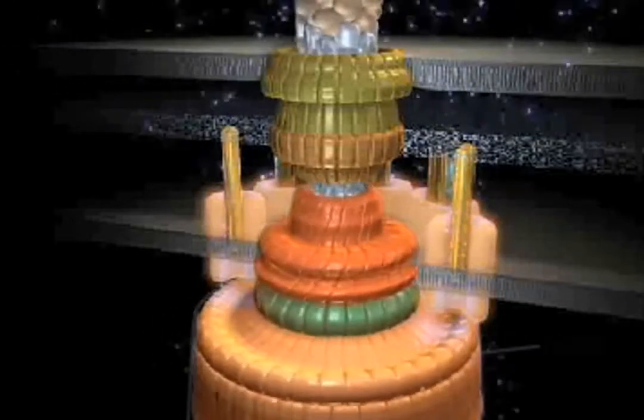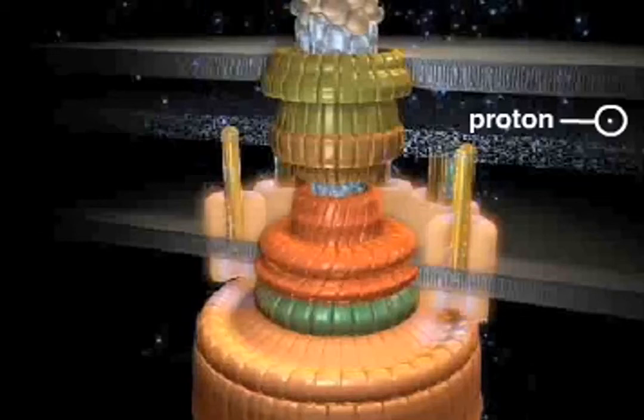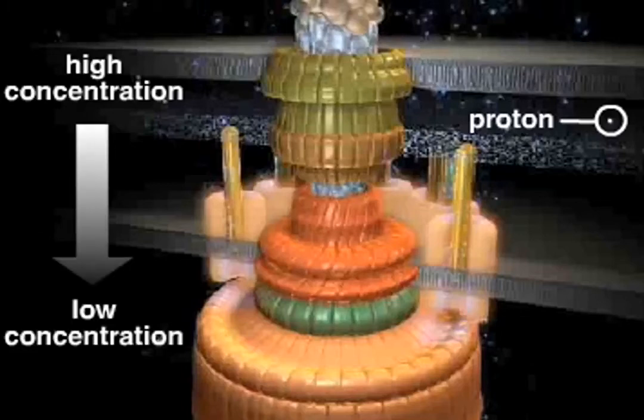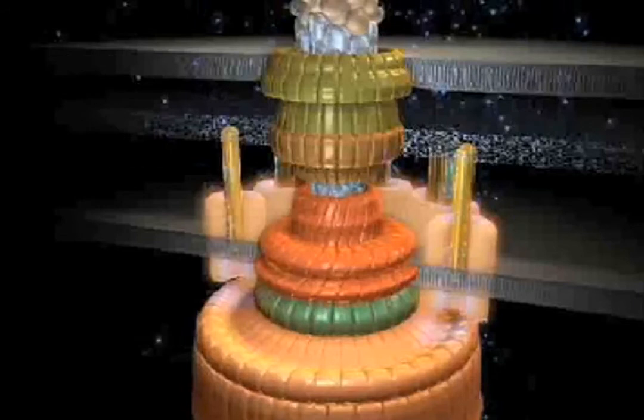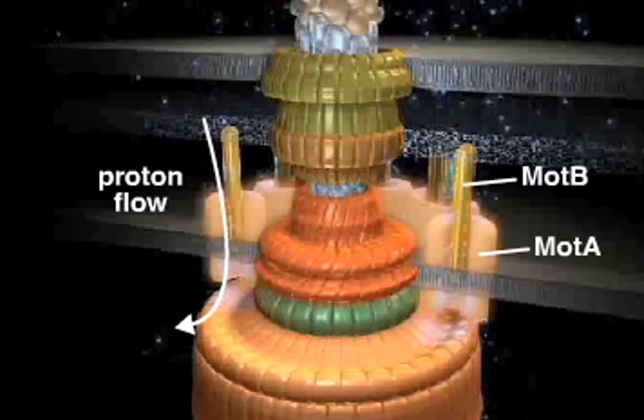The motor derives its power from a proton gradient across the membrane. In this example, a high concentration of protons exists outside and a low concentration exists inside the cell. The protons flow through the interface between two types of proteins, called MotA and MotB, that make up the stator.